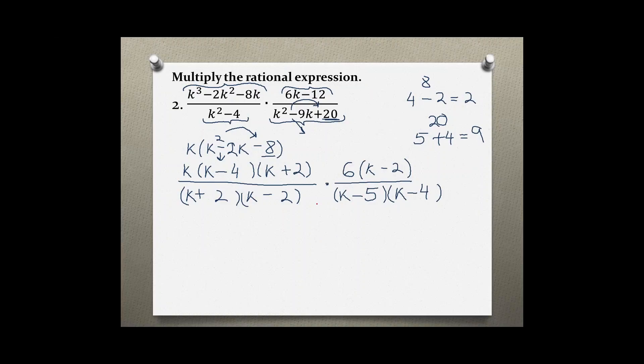Now I'm going to cancel everything in common on top and bottom. I have k minus 4 on top with k minus 4 in the bottom. Also k plus 2 on top with k plus 2 in the bottom. And k minus 2 on top with k minus 2 in the bottom.